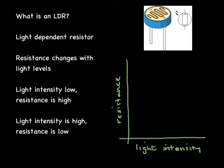First let's start off by looking at an LDR. An LDR stands for light dependent resistor. This means it's a special type of resistor whose resistance changes with light levels. When the light intensity is low the resistance of the resistor is high, and when the light intensity is high the resistance is low. So with changing light levels the resistance changes.